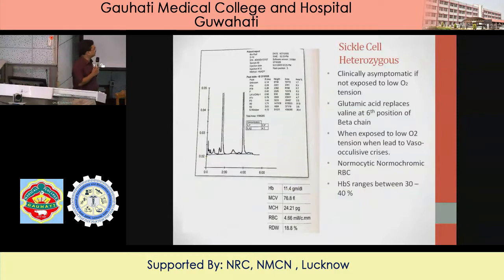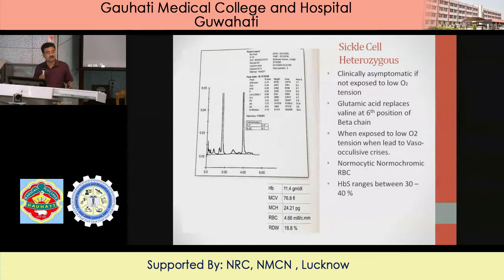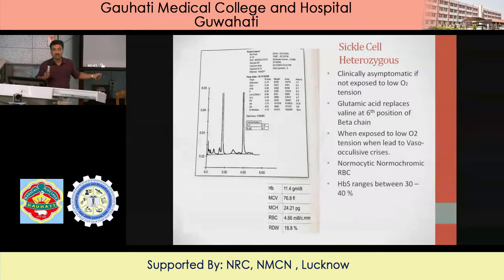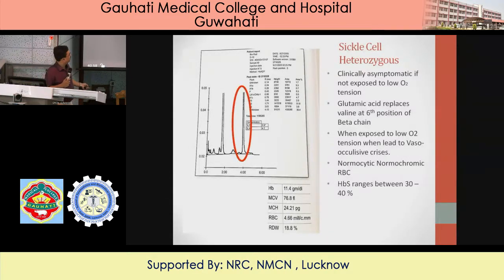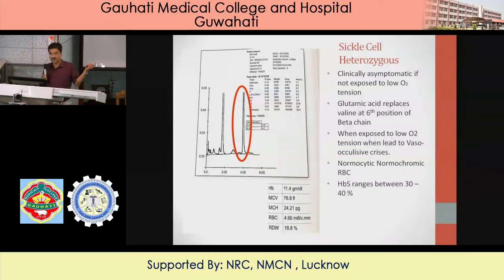HbS heterozygous (sickle cell trait) is usually asymptomatic unless encountering low oxygen tension. Glutamic acid is replaced by a neutral valine, creating sticky patches, so sickling occurs only during hypoxia. HbS usually lies between 30–40%. If you get such a chromatogram with the S window around 30–40%, it is a clear-cut case of HbS heterozygous — a straight diagnosis.